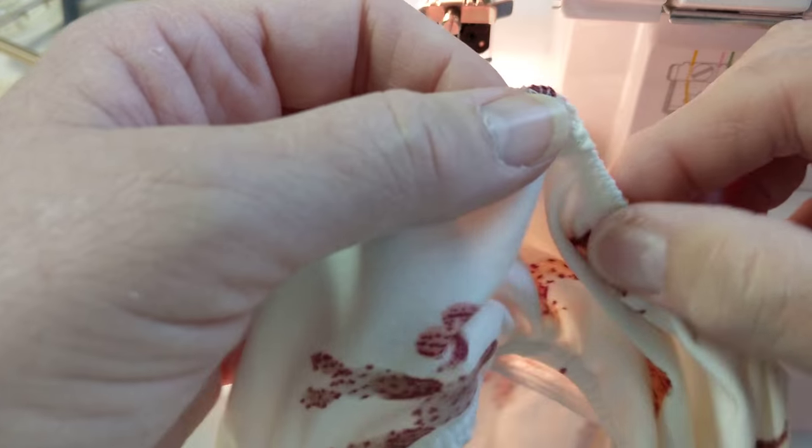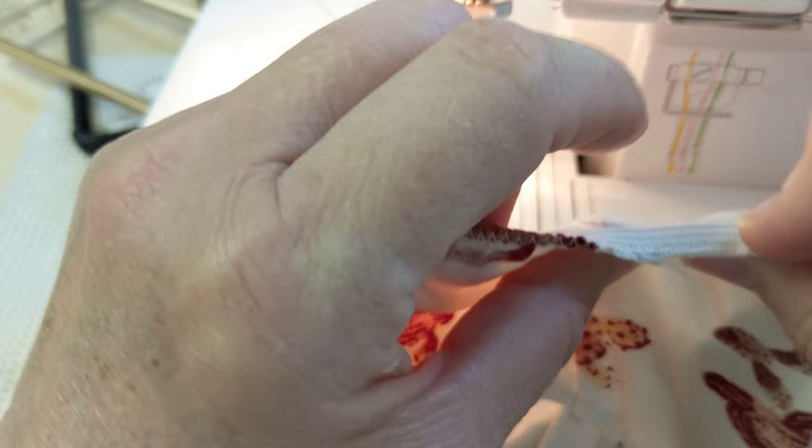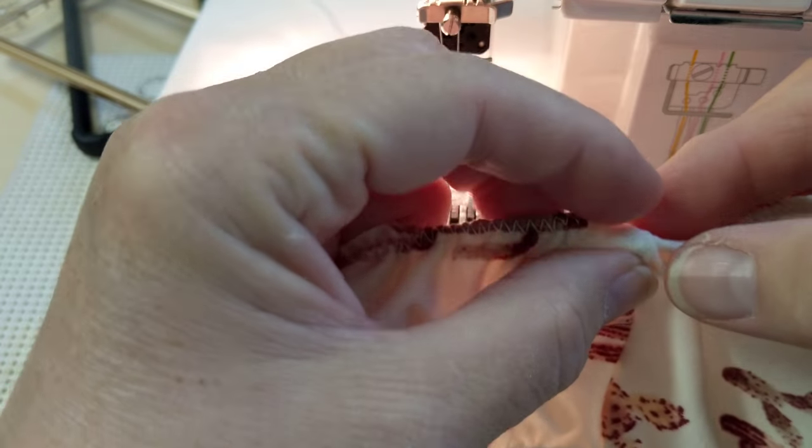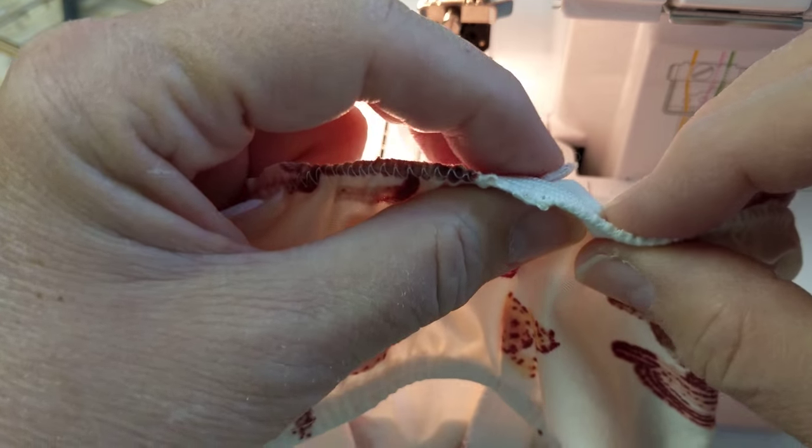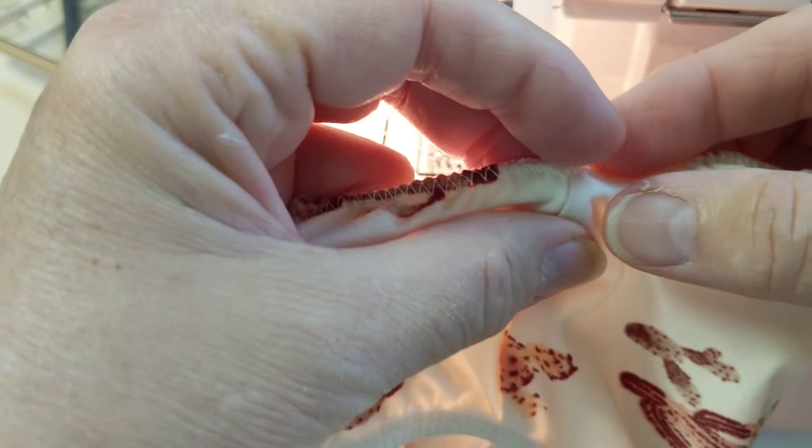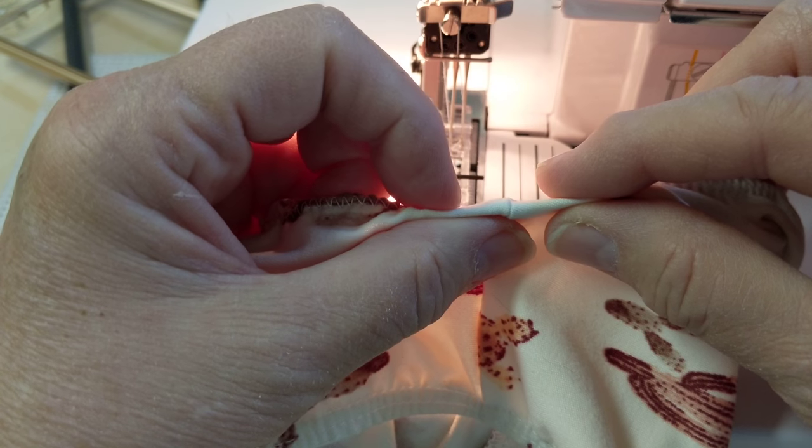And then when you come over to the cover stitch machine, instead of having it going the same direction and that's where you get your little lump, take it and flip it the other way and you're offsetting it and look how much nicer and flatter it is.